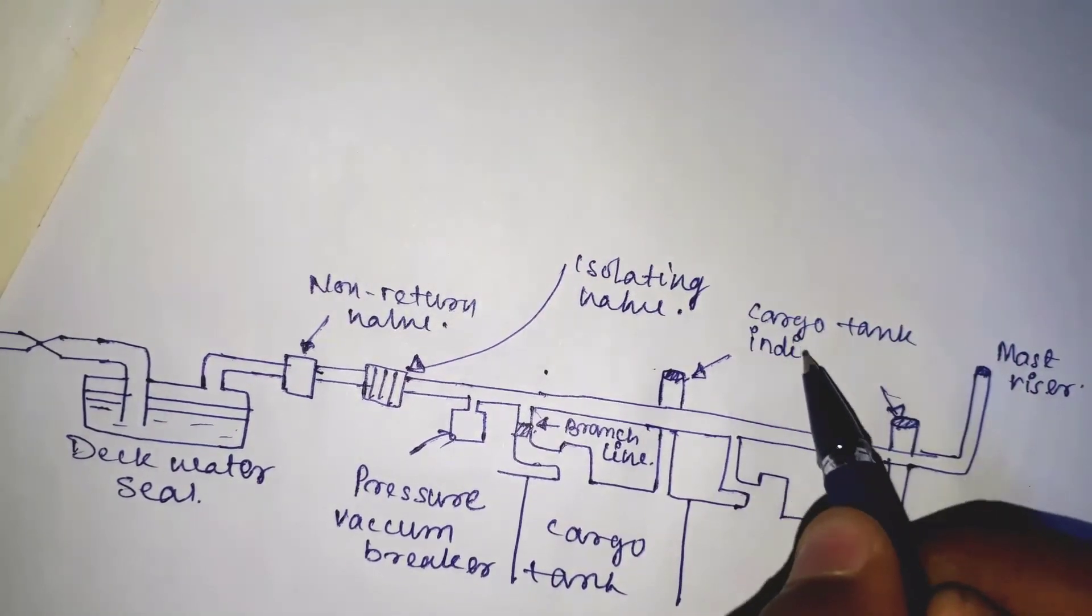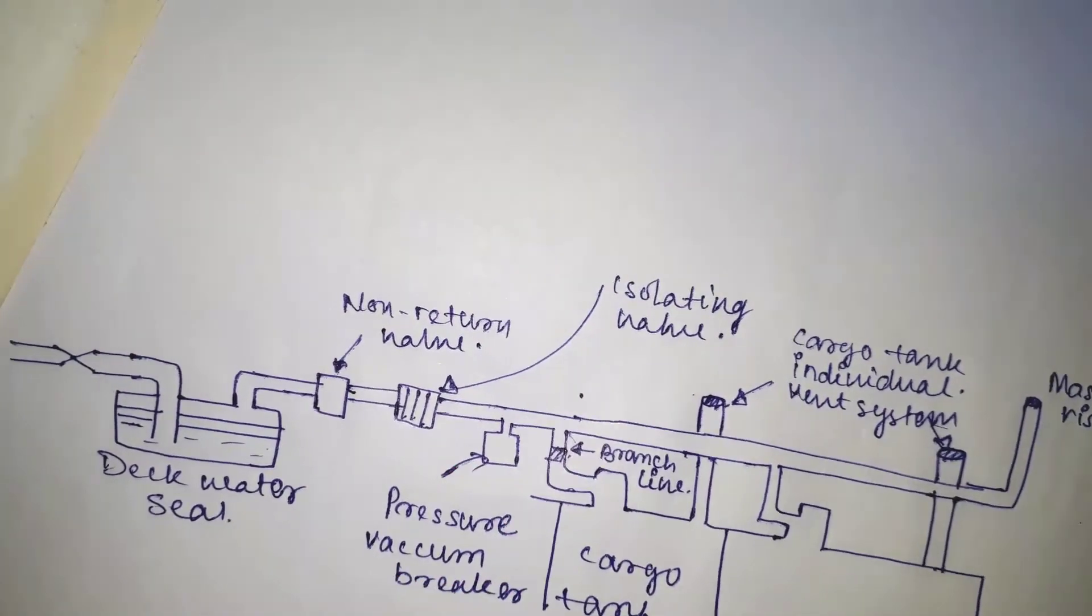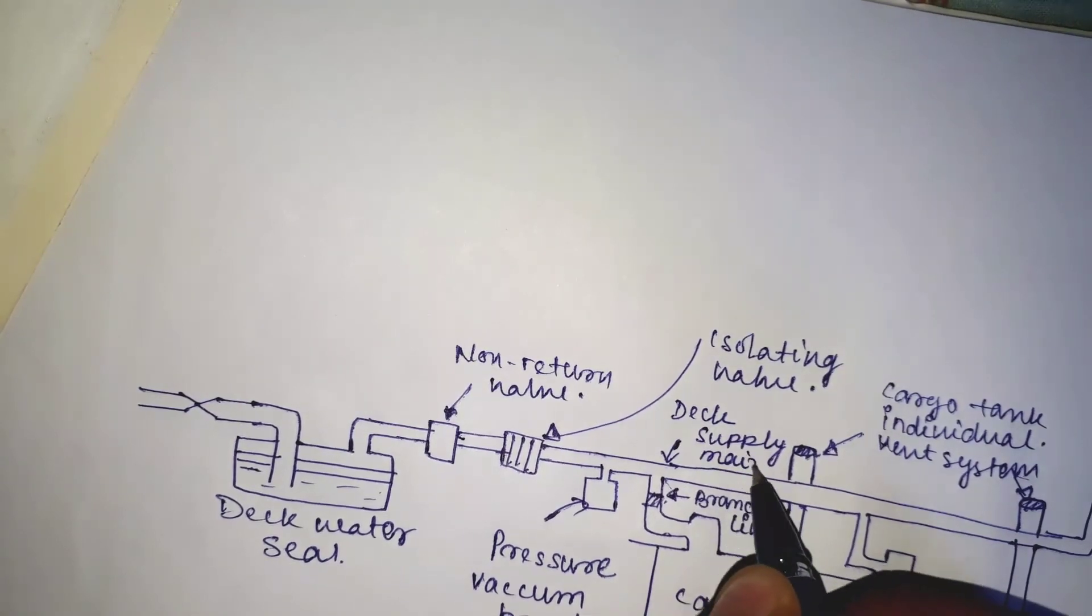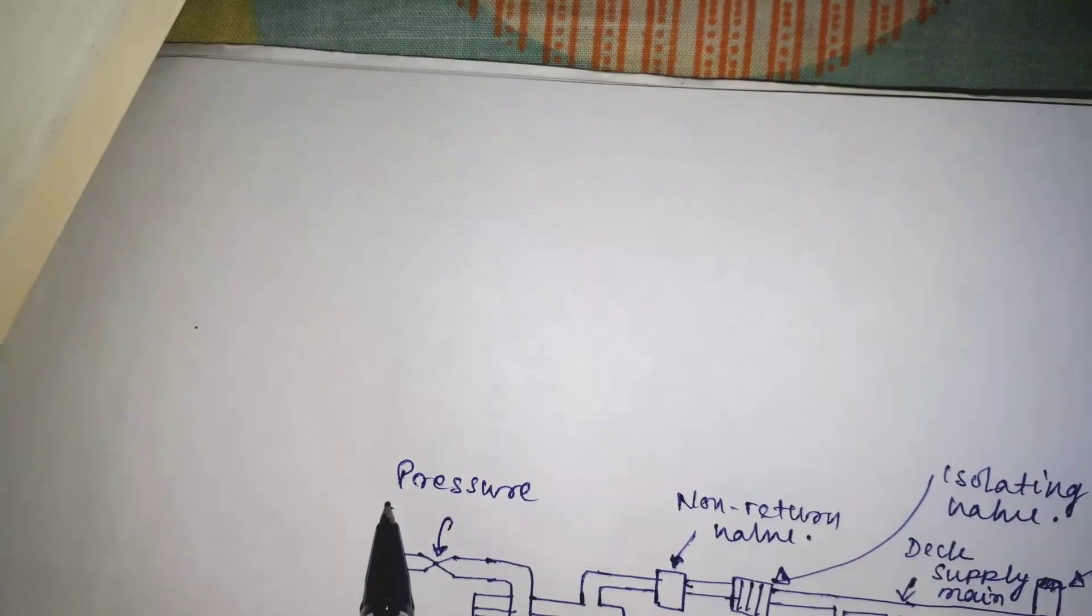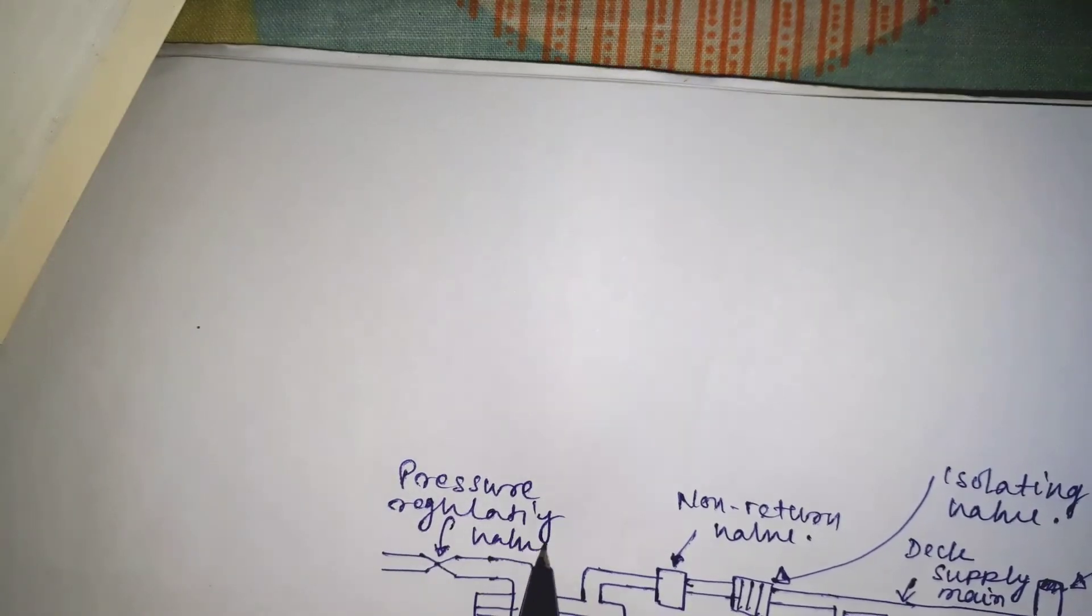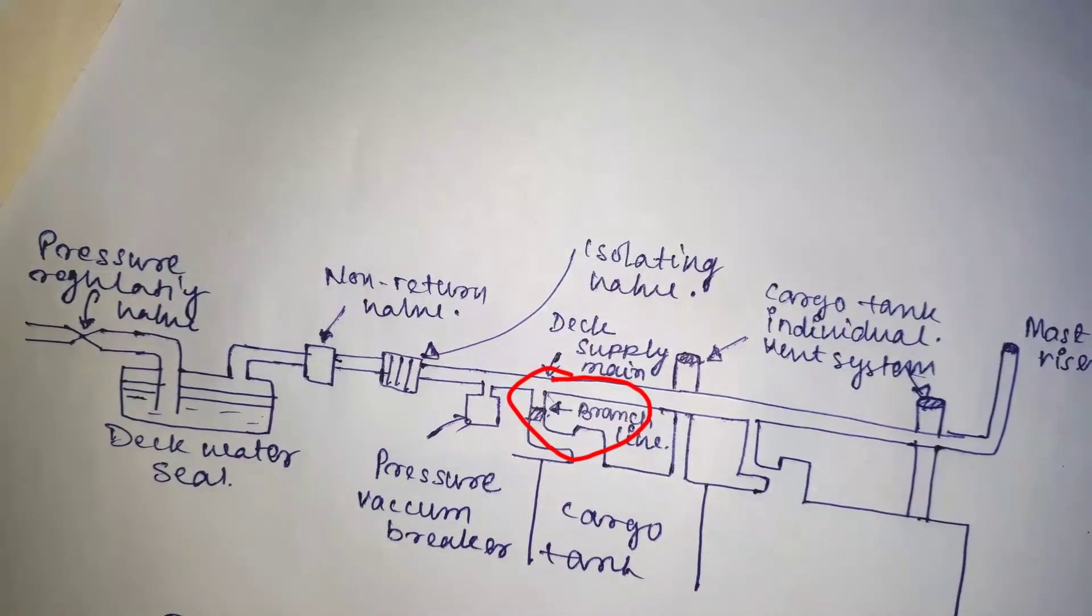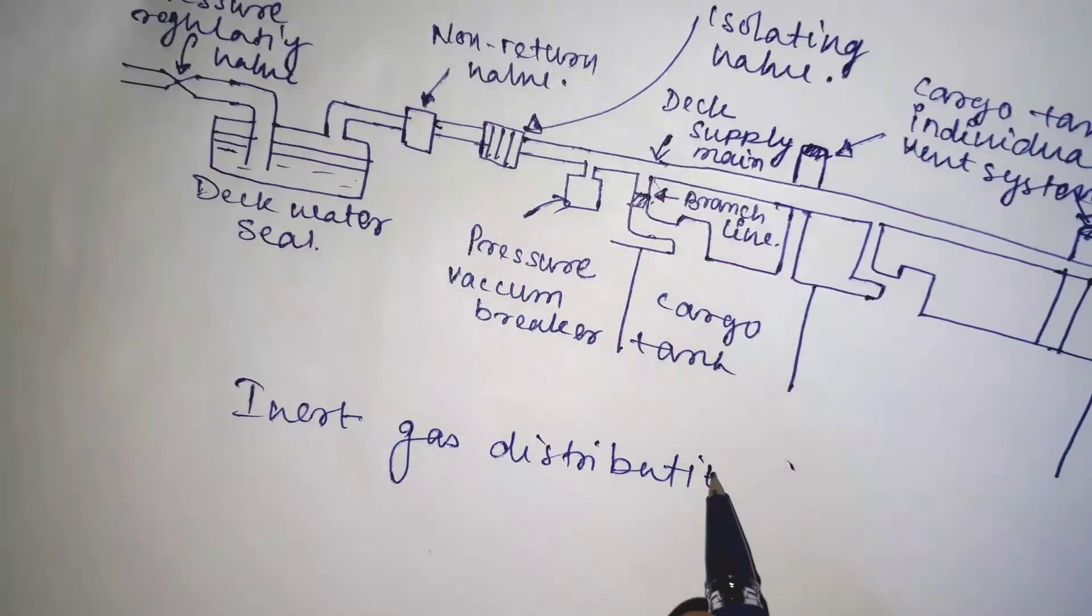The pressure vacuum breakers. These liquid-filled breakers are fitted in the deck gas main to prevent the cargo tanks from being subjected to excess positive pressure and to excess negative pressure. The branch lines. These pipes deliver the inert gas from the deck main to the individual cargo tanks. Another branch line is in the form of a mast riser to allow the venting of the gas to the atmosphere.